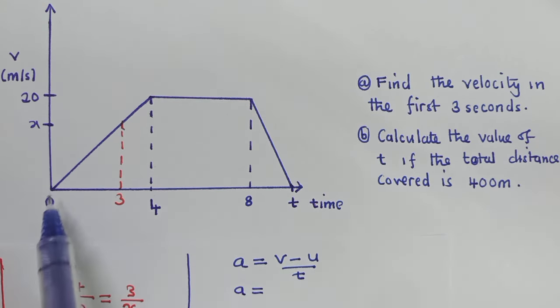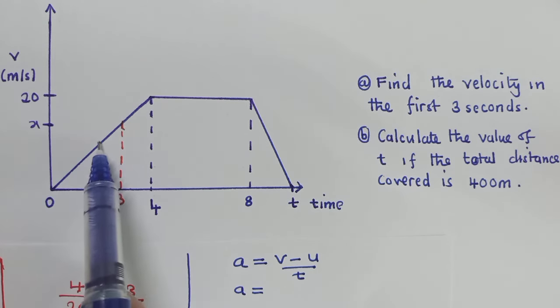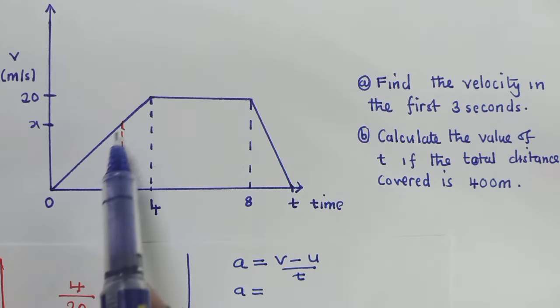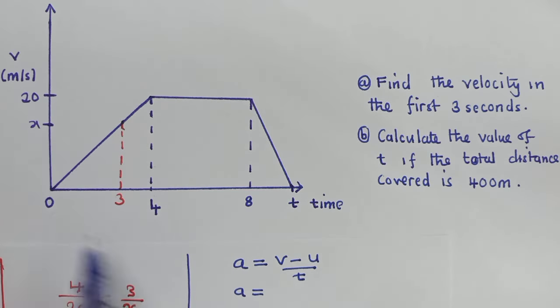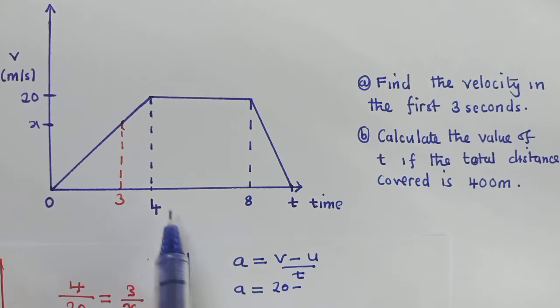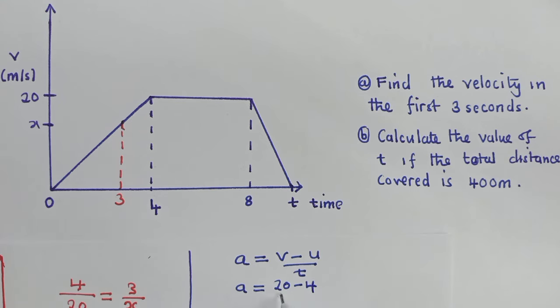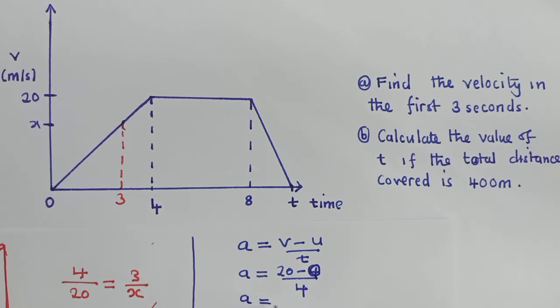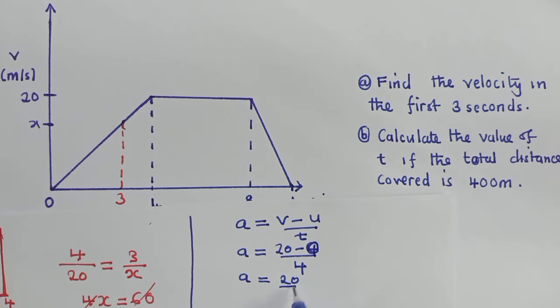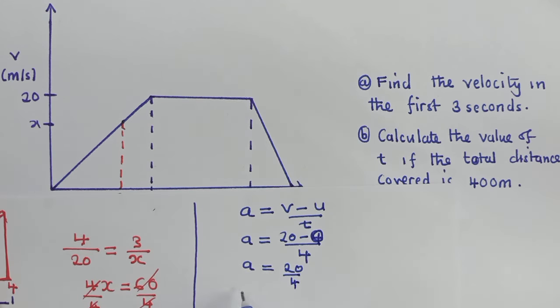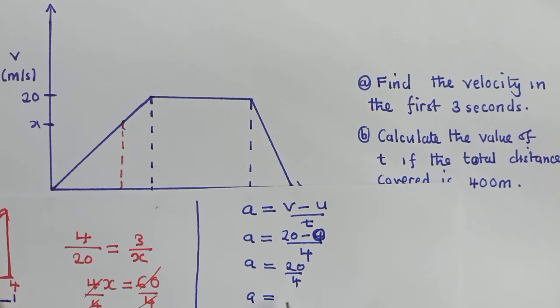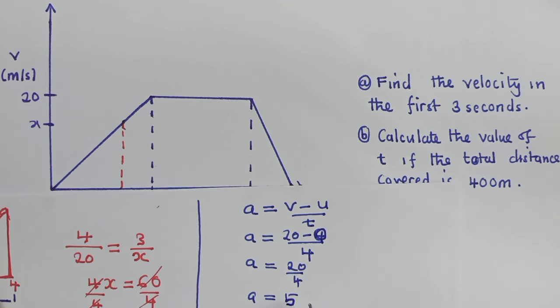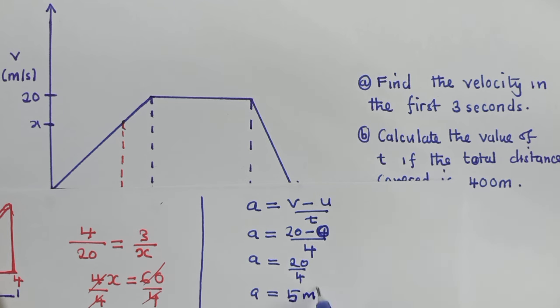So here we will calculate the acceleration. Because the acceleration is the same from here up to here. So what is our final velocity right here? It's 20 minus the initial velocity, which is 0, over time, which is 4. So you solve there. We have 20 over 4, and our acceleration is equal to 5 meters per second squared.